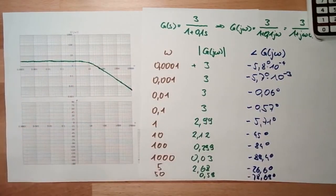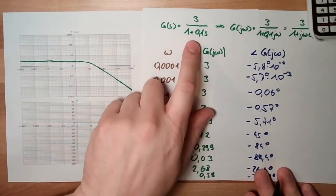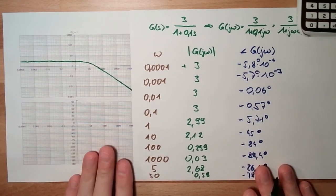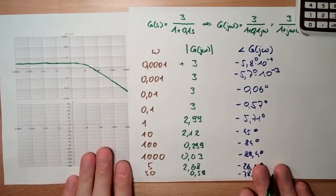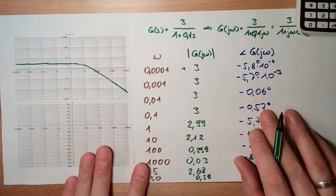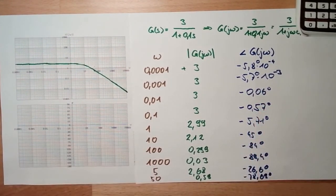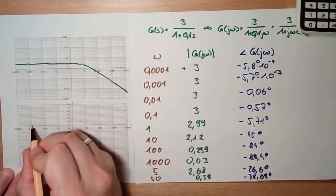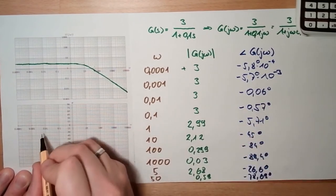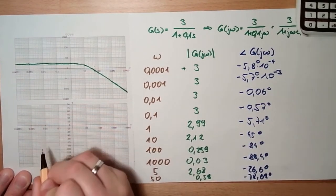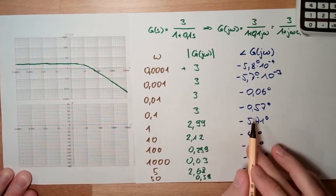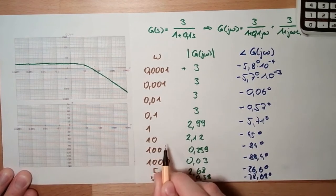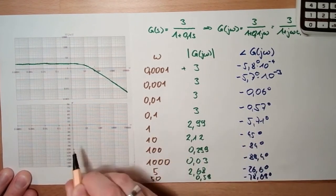This is the Bode plot. It looks familiar because this is a PT1 element — this is why it looks so familiar. Now let's have a look at the angle. Here at low frequencies we are at almost minus 0 degrees. Here also minus 0. This is minus 0.06 degrees — maybe we see it a little bit. At 0.1 it's minus half a degree. At omega 1 it's minus 5 degrees.